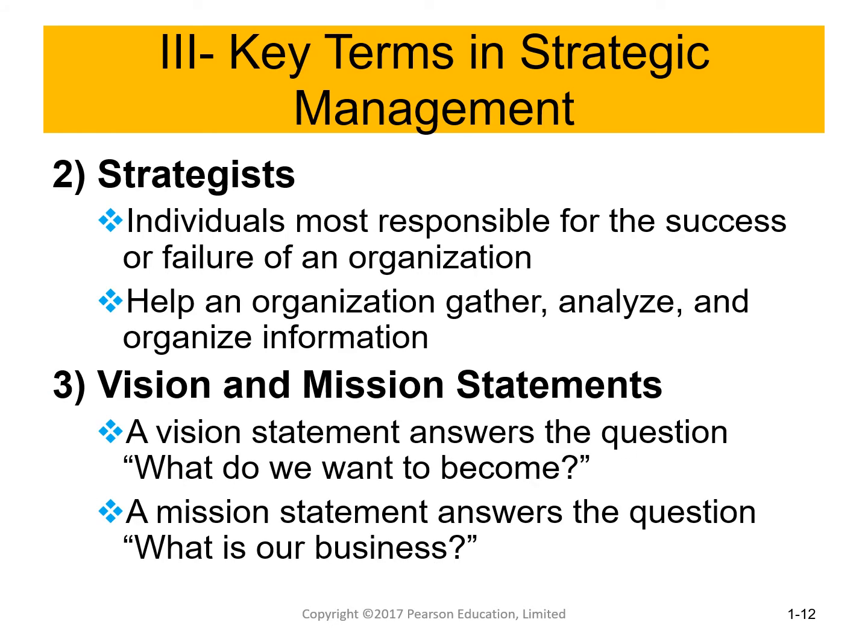The second key term is 'strategists.' Strategists are the people mainly responsible for implementing the strategic plan of the organization. They are responsible for the success or failure of an organization. They also help the organization by gathering data, performing analysis, and organizing all the information and data within the company.